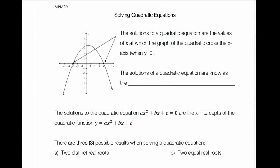In today's note we are going to look at solving quadratic equations. The goal of solving quadratic equations is to find solutions where the values of x cross the x-axis. We're looking for where the graph crosses the x-axis, or we're trying to solve when y equals zero. Looking at this quadratic, we can see we have two solutions at negative 3 and 4. The solutions are known as the x-intercepts, which are also known as the roots or zeros.